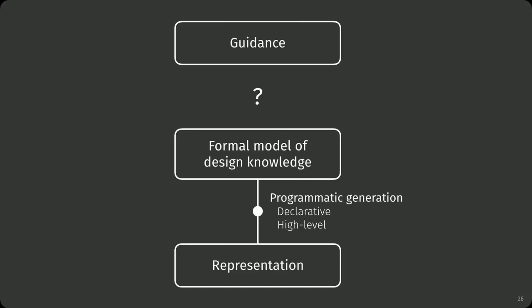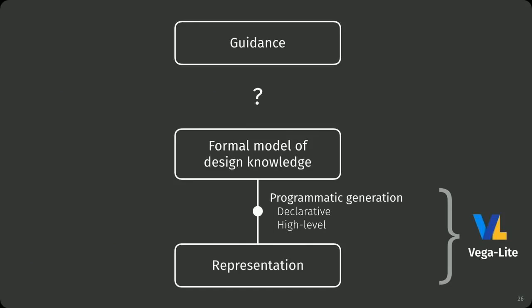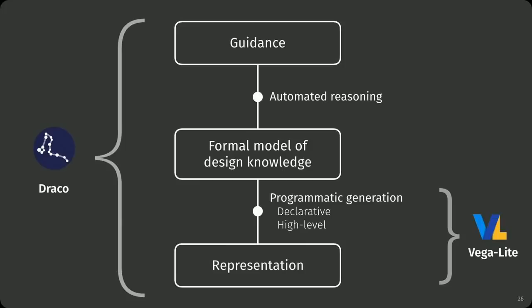This formal model needs to be expressed in some language — a convenient yet powerful representation. This representation should be declarative, because we want to reason about design and not the execution, separating specification from execution. The specification should also be high-level with few constructs so we can reason about it. We're going to do that through Vega-Lite. Once we have this representation, we bridge the gap to actual guidance through automated reasoning over this formal model of design knowledge, implemented in a system called Draco. This gives you an overview of where Vega-Lite and Draco fit into the goal of providing guidance.